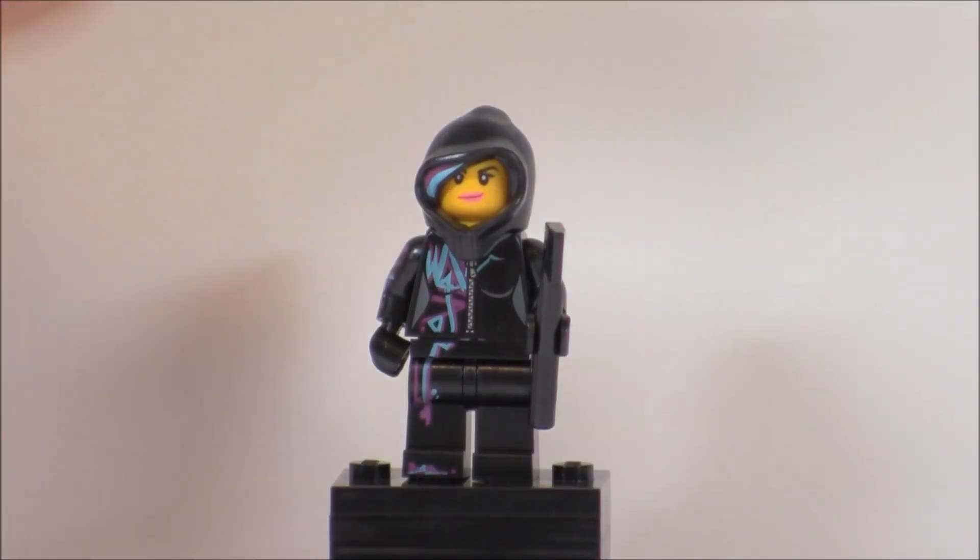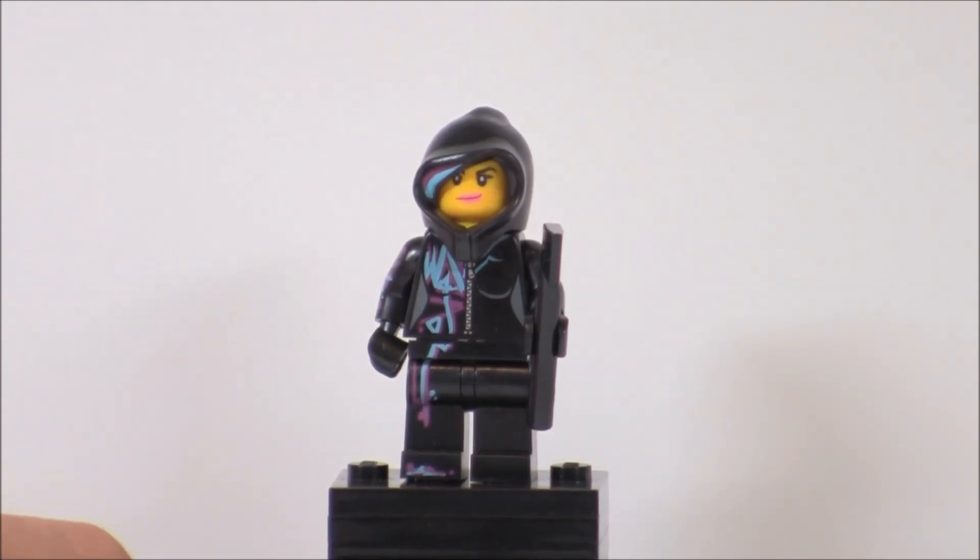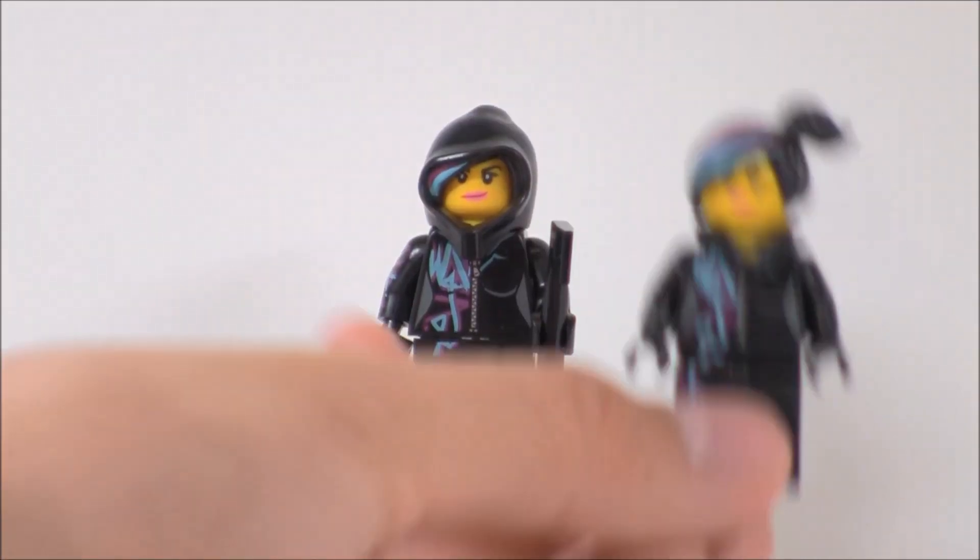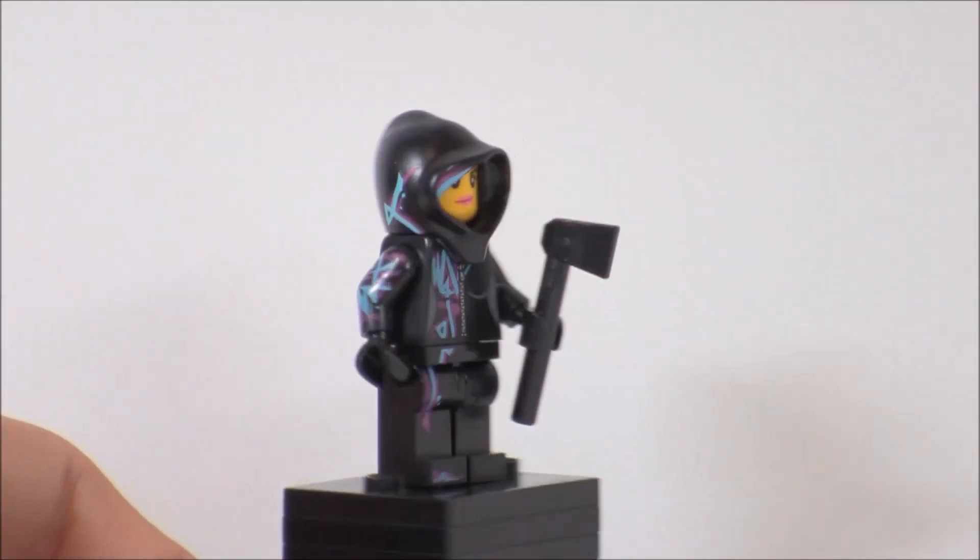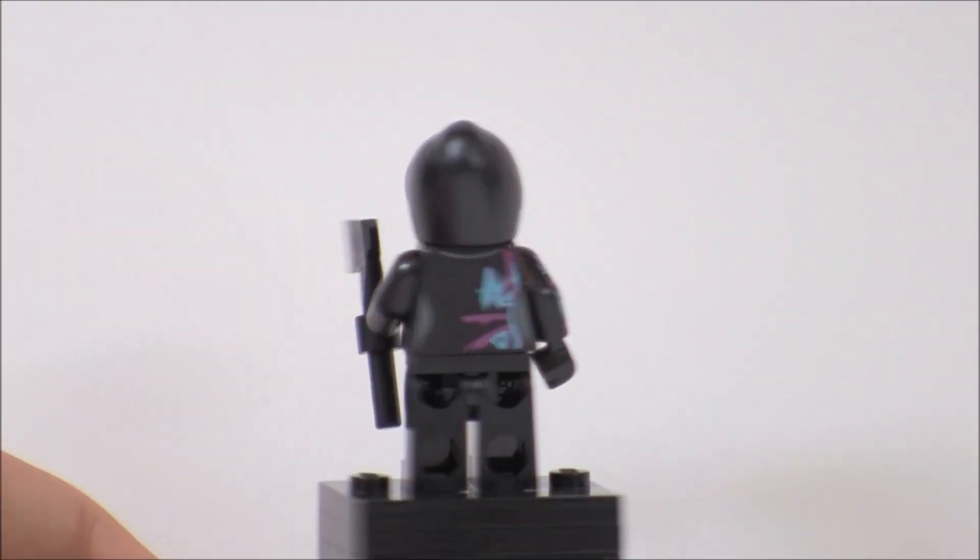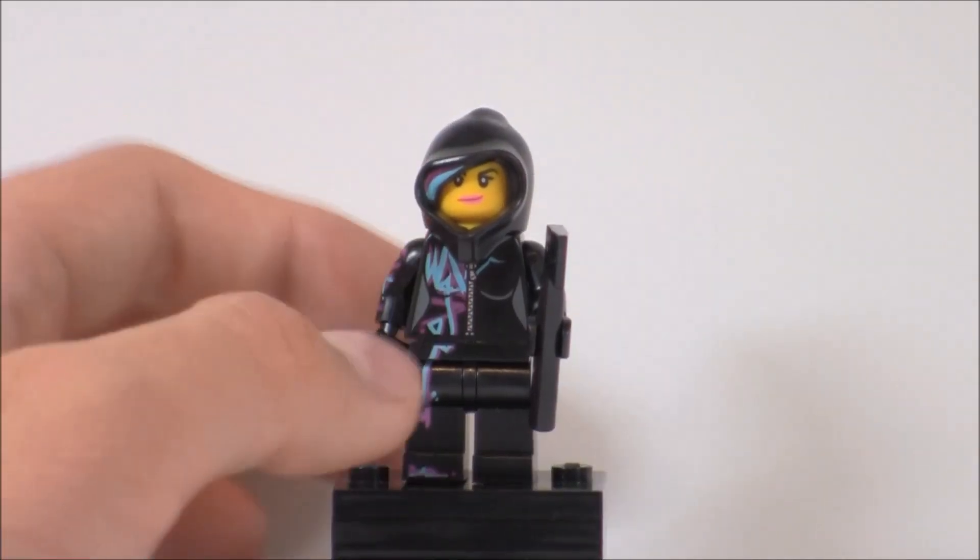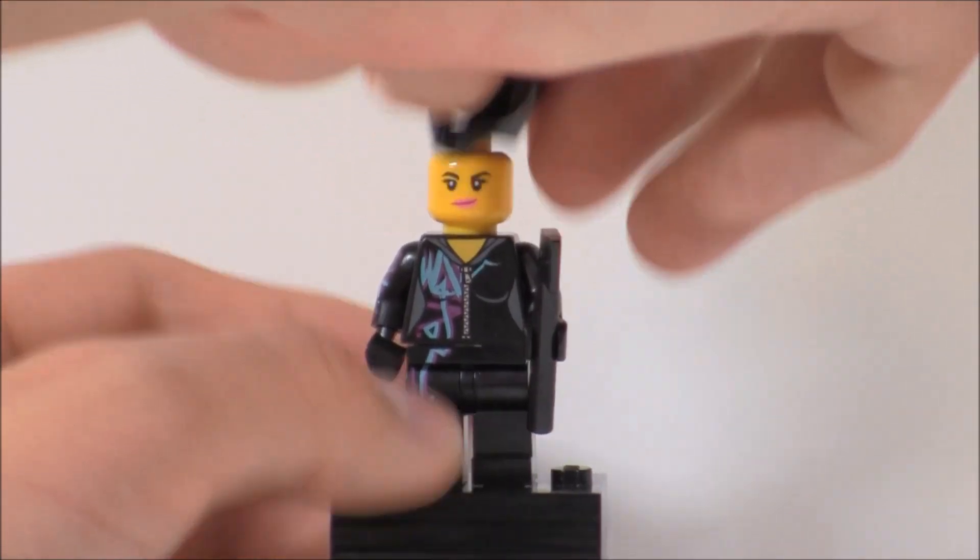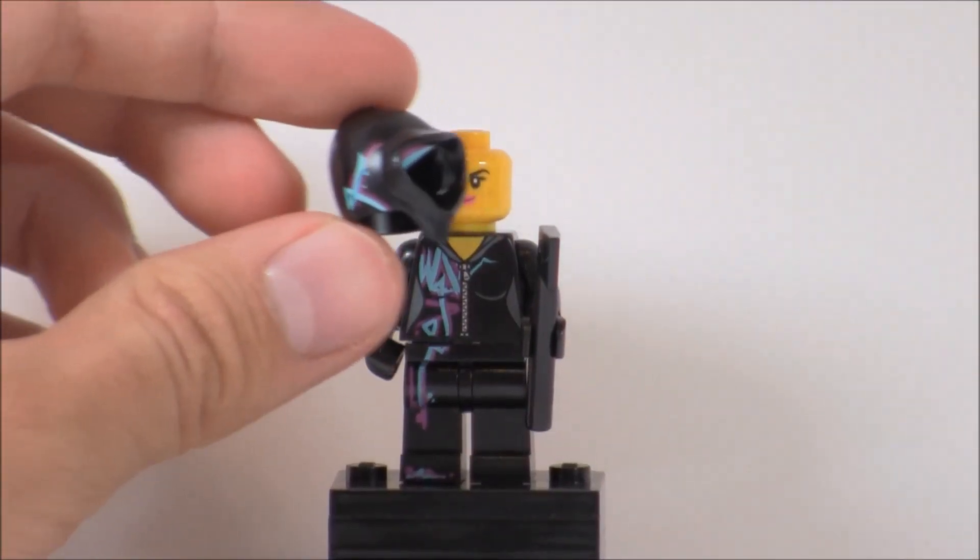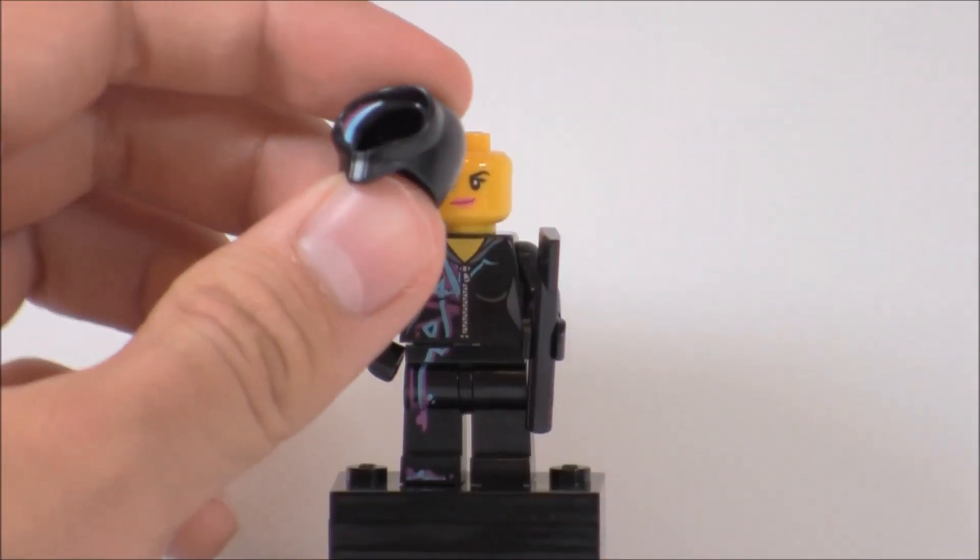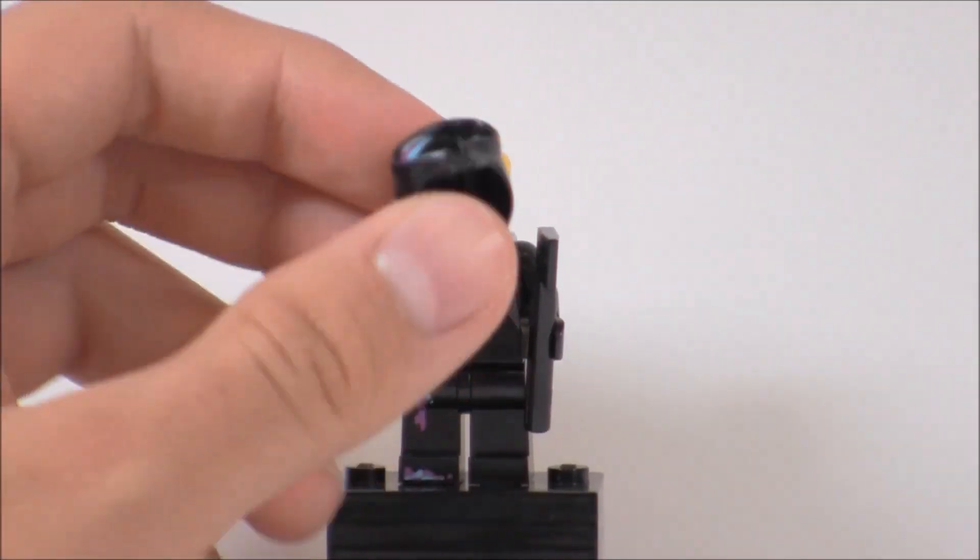Next up is Wild Style, and this version is exclusive to the set because of her hood. Her torso printing is the same that comes in other sets like Cloud Cuckoo Palace. Her leg printing is the same too, and you can see her back printing there. She goes with this little axe, but the best part is the hood because it's exclusive to the set. It's a very nice mold but for some reason they put the little graffiti mark or Wild Style art stamp. You can see her hair a little bit.